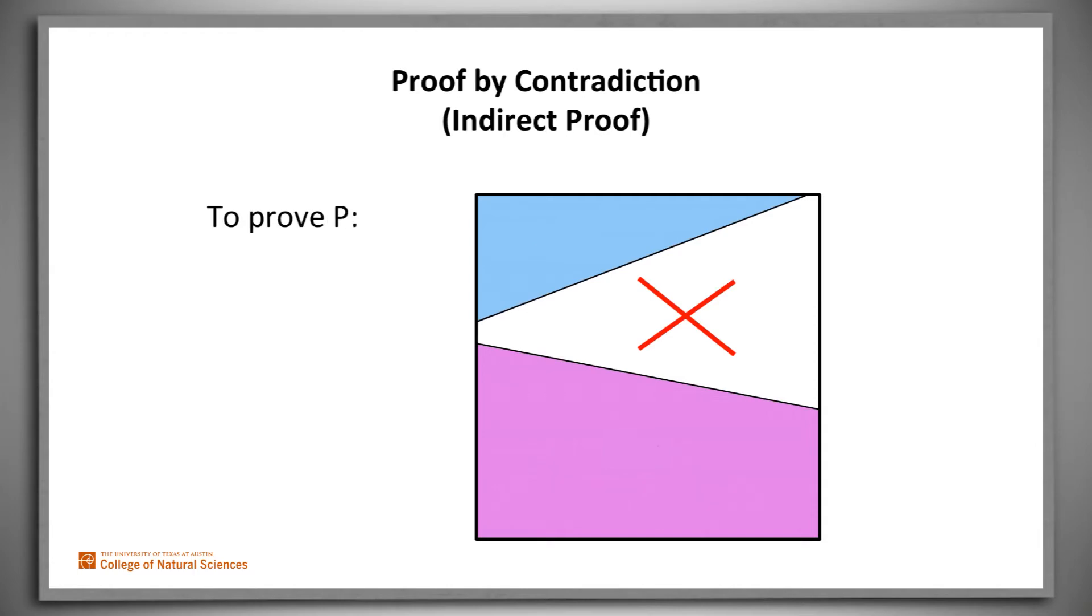So, to prove P, assume that not P is true. Derive a contradiction that proves that not P is false. In other words, not not P is true. So, we've ruled out one of the remaining two options. So, P has to be true.